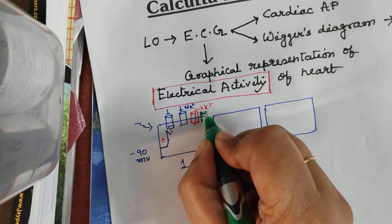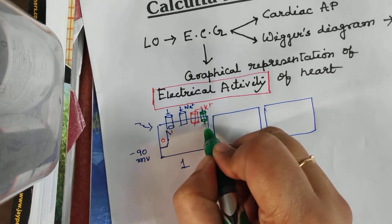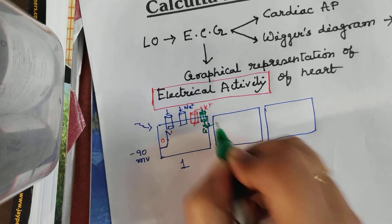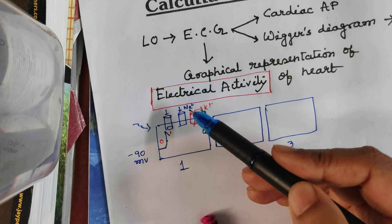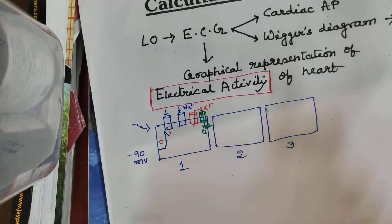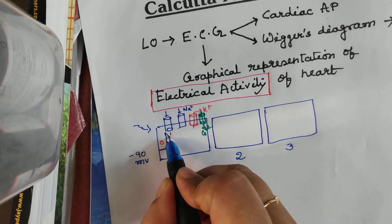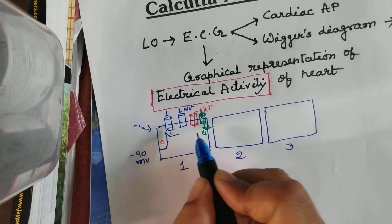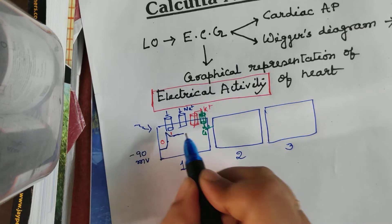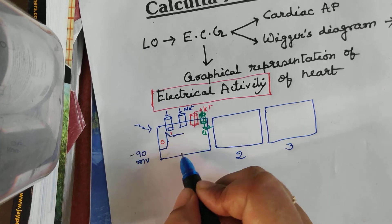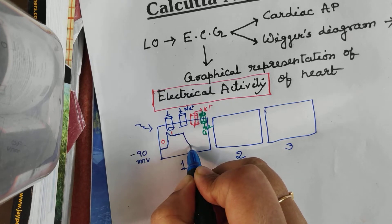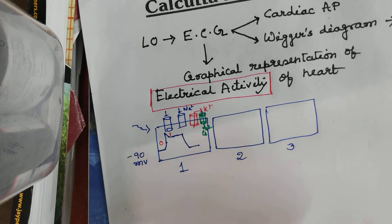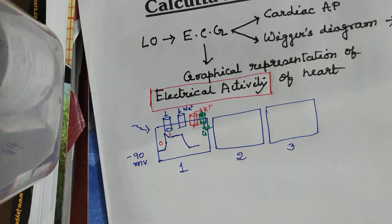At phase 1, another channel opens — the slow calcium channels — through which calcium comes in. Some potassium, being positively charged, is going out, and calcium is coming in. When they balance each other, we get a plateau phase. After a certain period, the calcium channels close and only potassium channels remain open, so the repolarization process takes place.